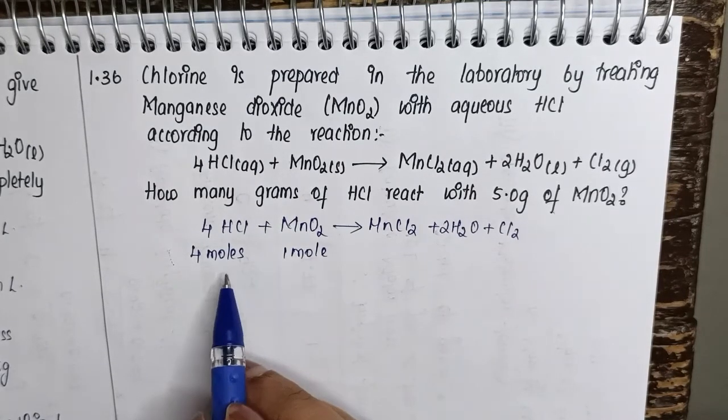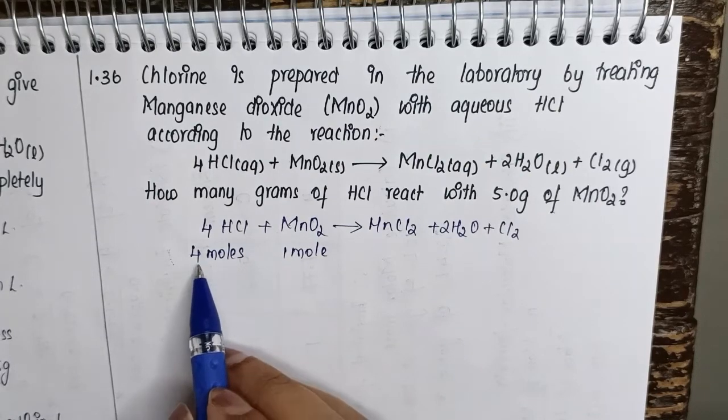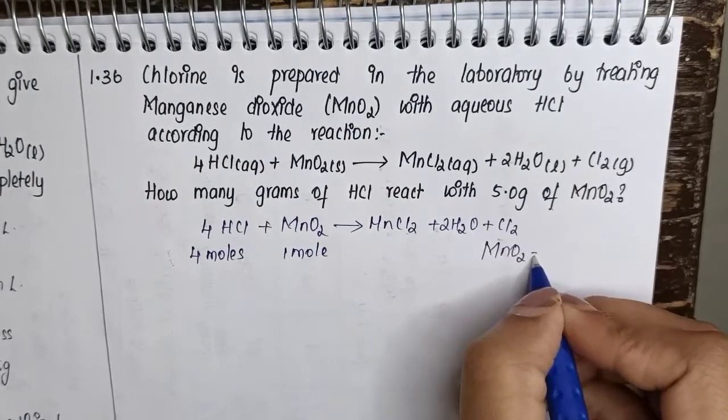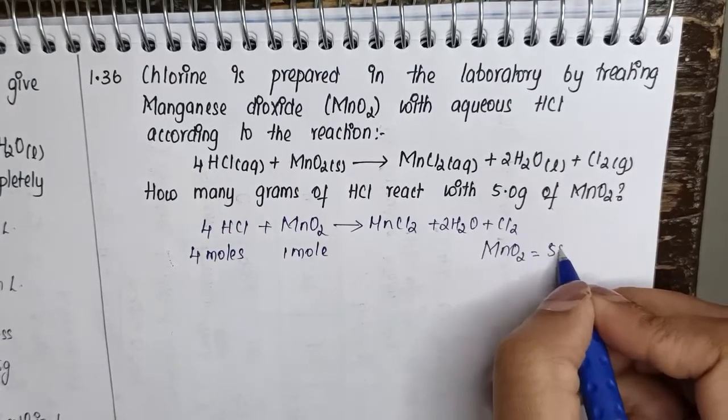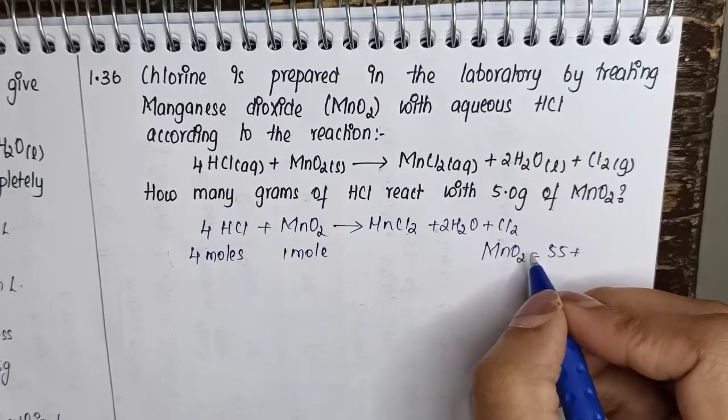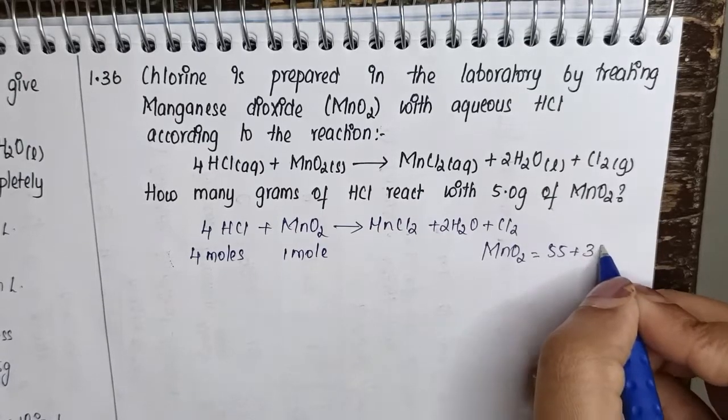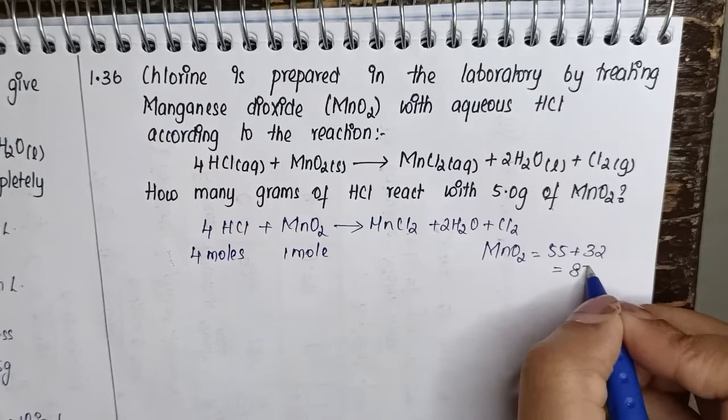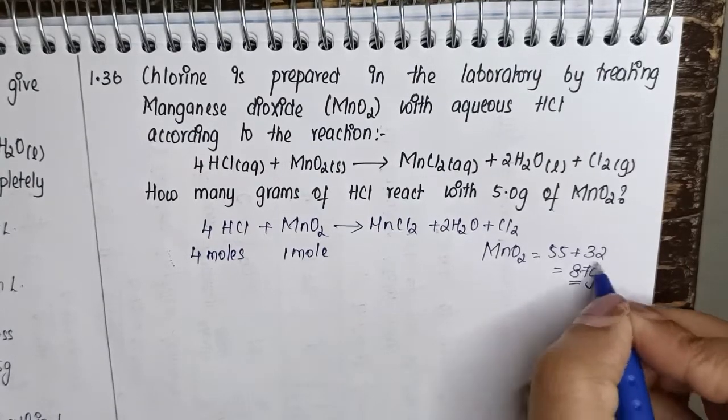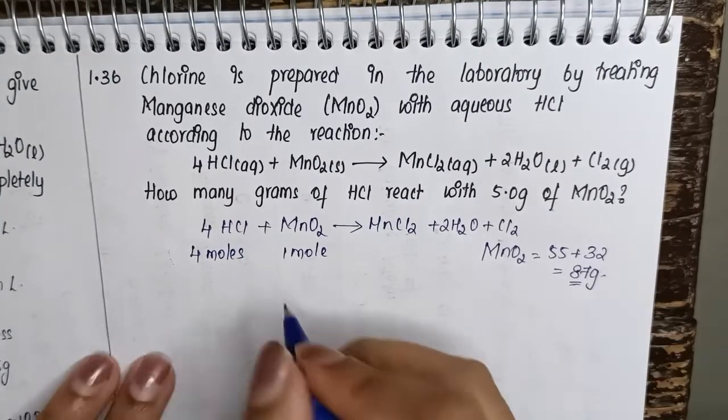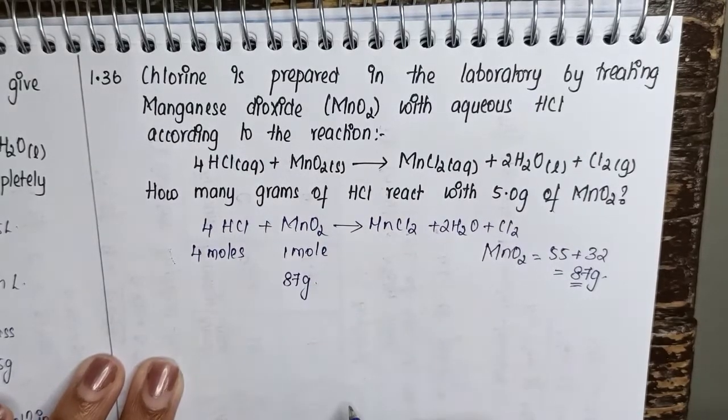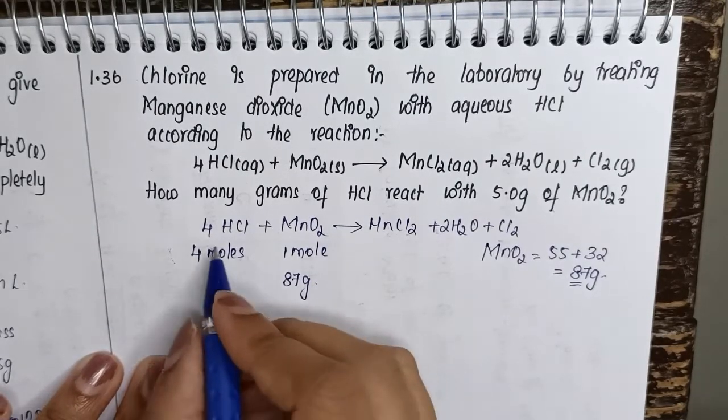So here for MnO2, the molecular mass of MnO2 is equal to Mn is going to be 55 plus oxygen is 16, 16 into 2 will be 32. Now when we solve this you will get 87 grams, which is the molecular mass of MnO2. So we will write this over here in terms of grams, it is 87.